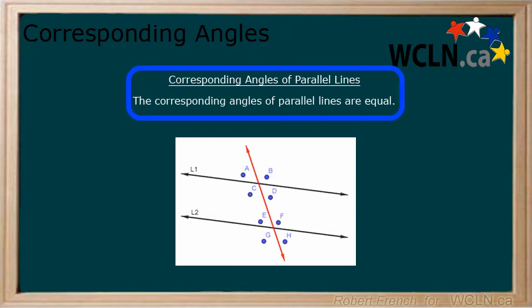Corresponding angles of parallel lines are equal. So, angle A and E are equal. Take a moment and write down all of the other corresponding angles. Press pause to write them down and play when you are ready.